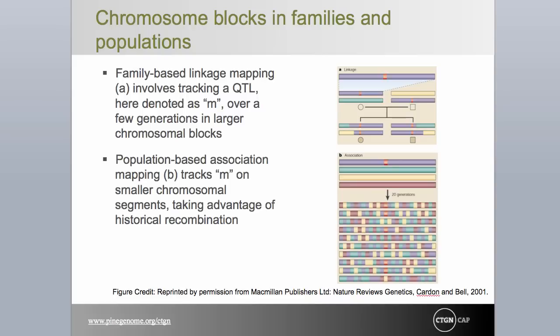Now consider simply sampling an array of unrelated individuals, each the product of tens to hundreds of generations of crossovers. Chromosomal blocks in these individuals are much smaller, and markers even a few centimorgans away from a QTL may not be predictive of the QTL allele desired. Association genetics seeks to find markers that remain in disequilibrium with the QTL even after all this recombining. To be fair, LD is a bit more complicated — two loci may be in strong LD even though they are not tightly linked.